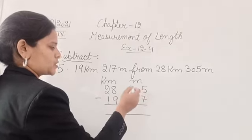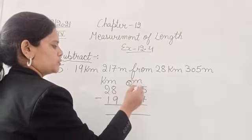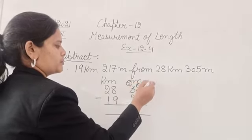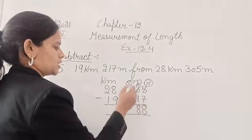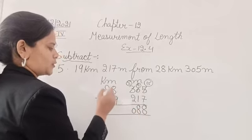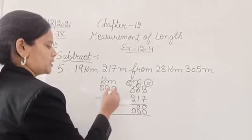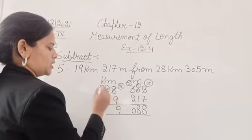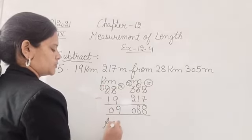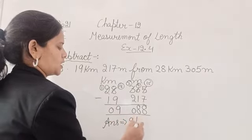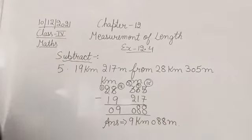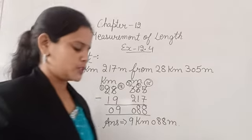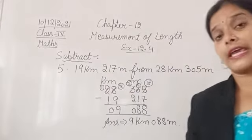5 minus 7 is not possible. This is 0, so it will borrow from here. This will become 2, this will become 9, and this will become 15. 15 minus 7 is 8. 9 minus 1 is 8. 9 minus 1 is 8. 2 minus 2 is 0. 8 minus 9 is not possible, so it will borrow. This will become 1, this will become 18. So the answer is 9 kilometer and 88 meter. Rest of the questions up to question number 8, you have to do by yourself.